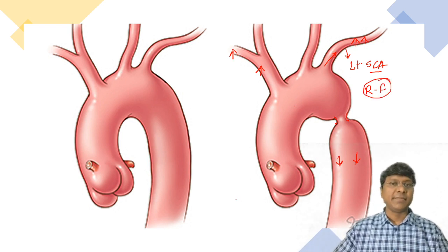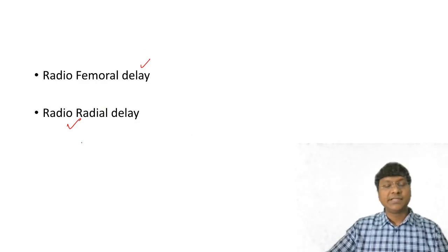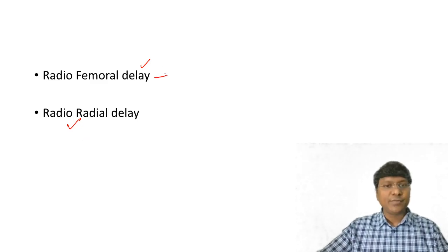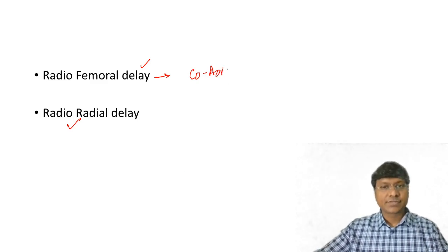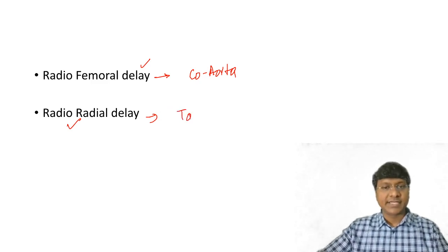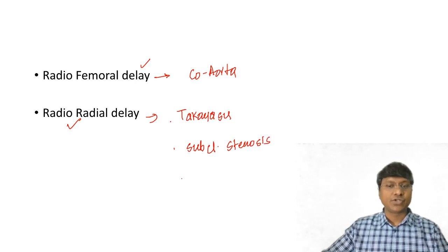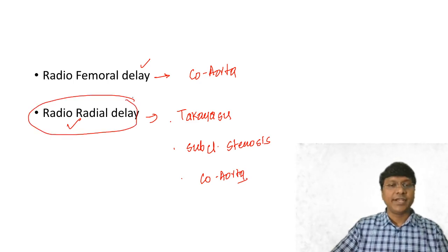There are two important MCQ points to understand: radiofemoral delay and radioradial delay. Radiofemoral delay is present in patients with coarctation of aorta. Radioradial delay is present in patients with Takayasu arteritis and subclavian stenosis, and to a certain extent also in patients with coarctation of aorta.